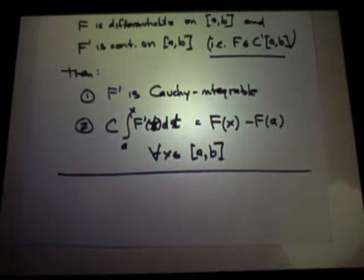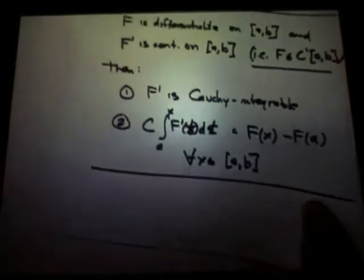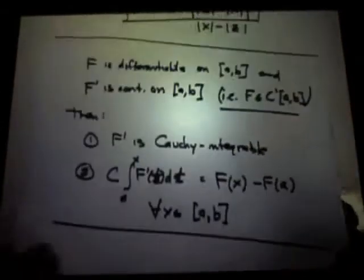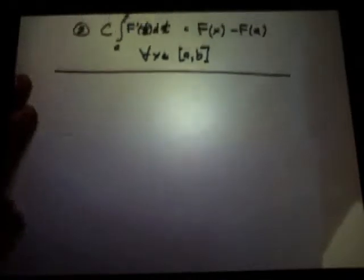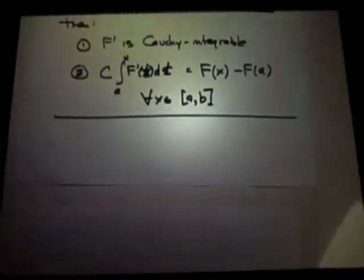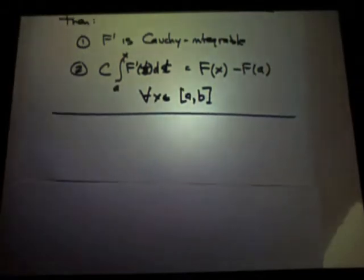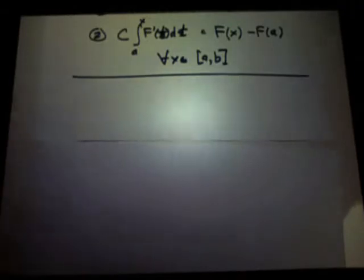Okay, so what is left to really prove here? Part one, if F prime is continuous, is there any issue with statement one? No, we proved that if it's continuous, the Riemann integral exists. So the only thing left to prove here is statement number two.